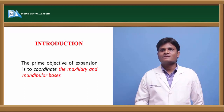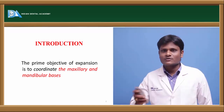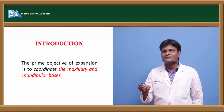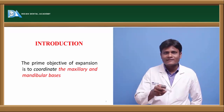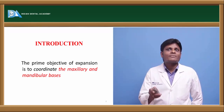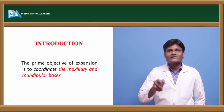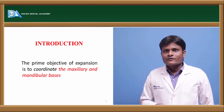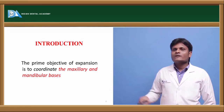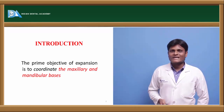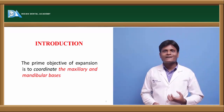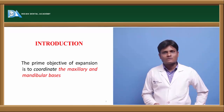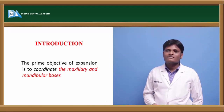Now in the process of expansion, even apart from correcting the crossbite, we also obtain some amount of space due to increase in the arch perimeter. The space thus obtained can be utilized for correction of crowding that can be seen in dental arches. So we will usually go for expansion in orthodontics to coordinate the maxillary and mandibular jaw bases and their dentition.